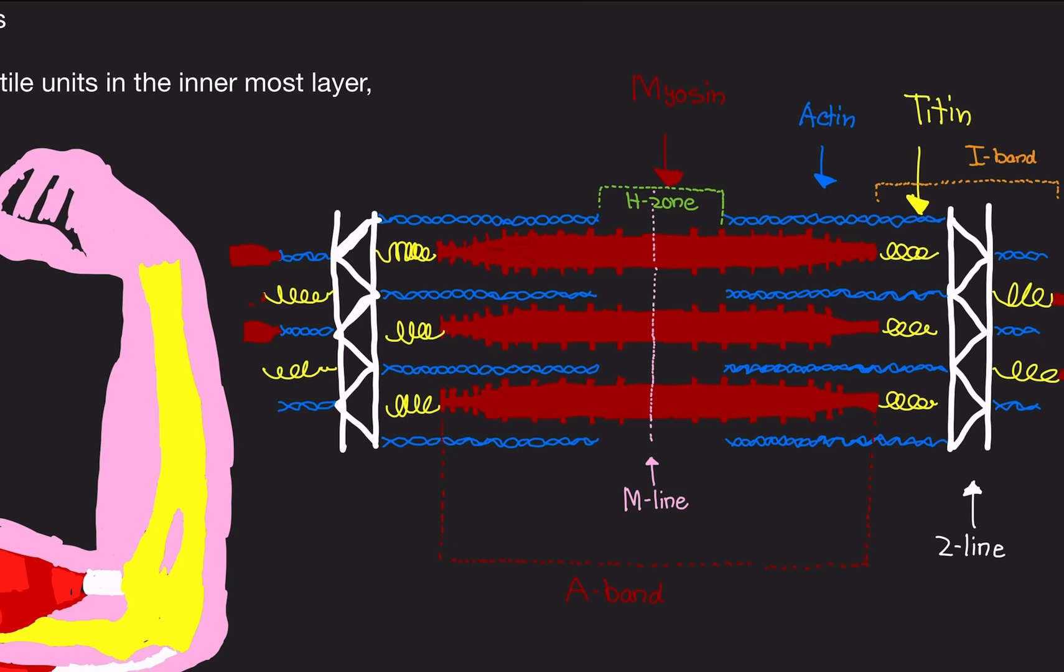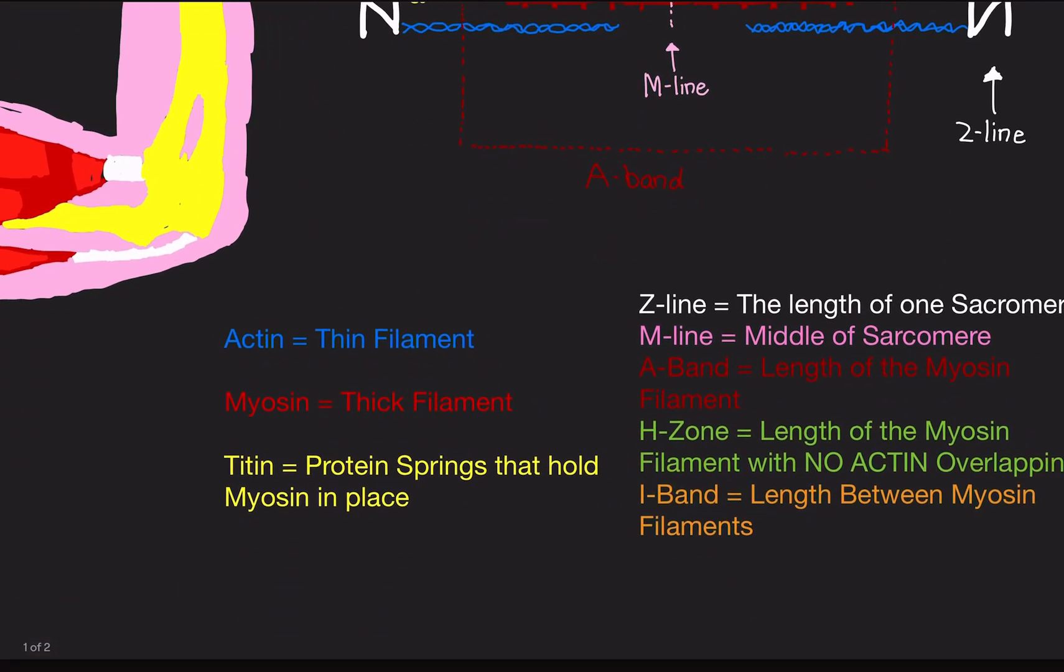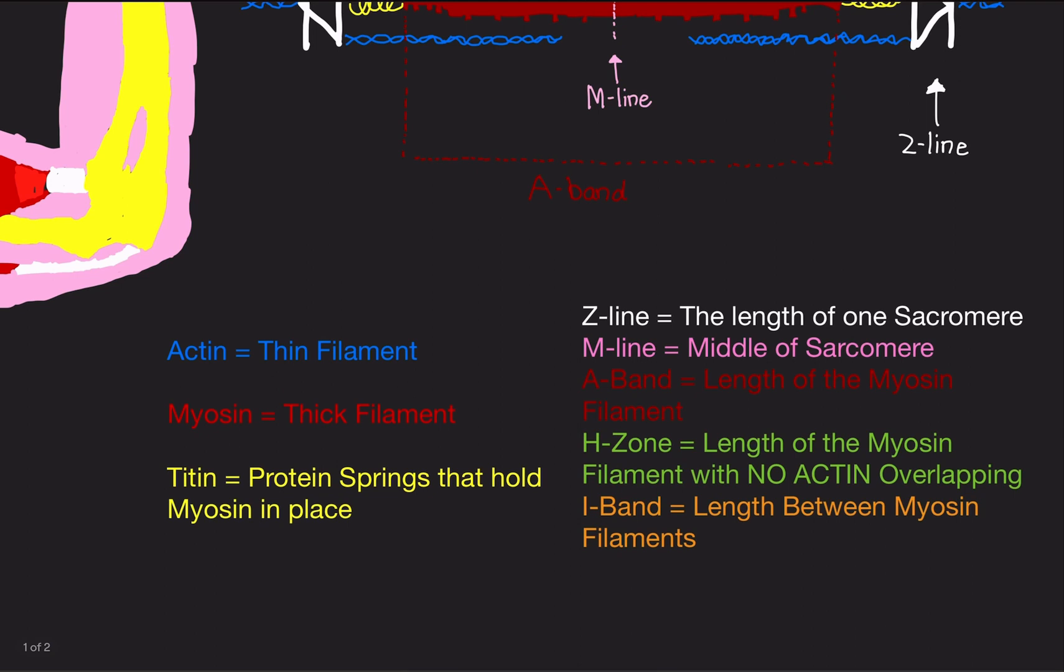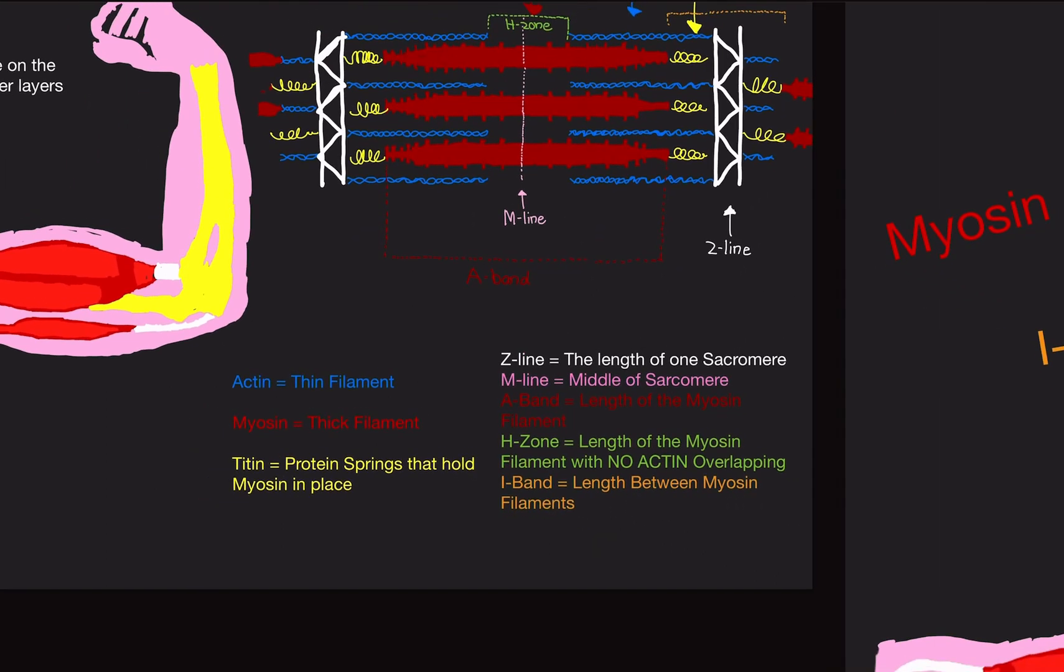Sometimes you'll have multiple choice or a question where they'll give you the definition. So the definition will be like, what's the length of the sarcomere? And you're going to say it's Z-line. You'll be given a definition. What's the length of myosin filament? That'll be A-band. Those kinds of questions.